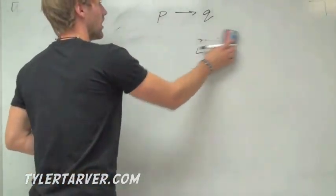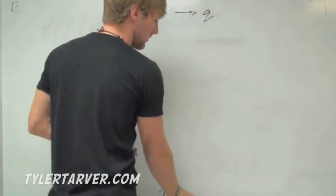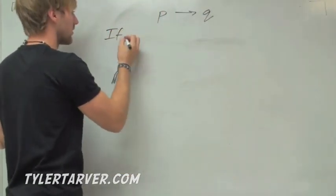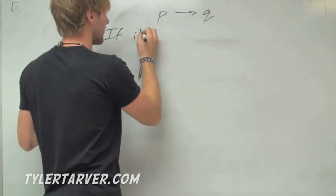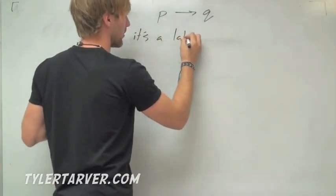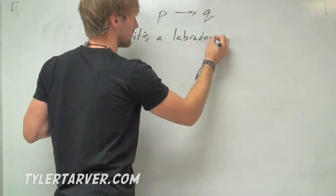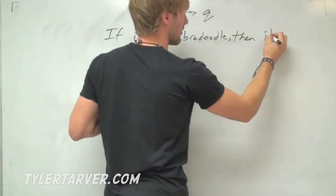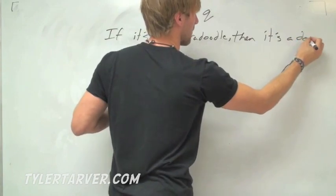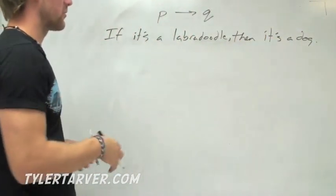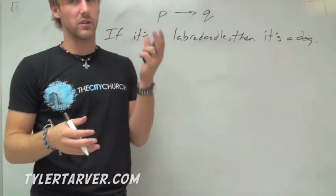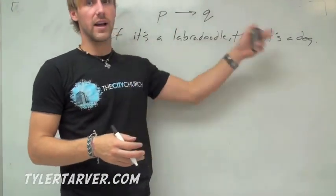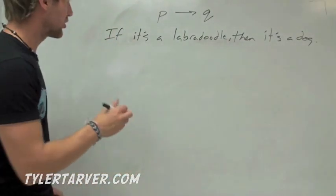Now we know our if-then statements. For example, if it's a labradoodle, then it's a dog. A labradoodle is a mix of a lab and a poodle, so obviously it's a dog. If it is a labradoodle, then it has to be a dog. So our statement is true.